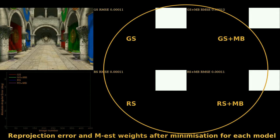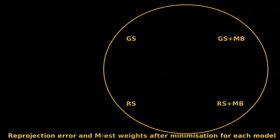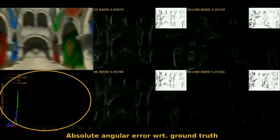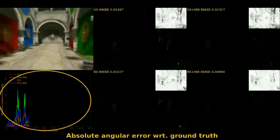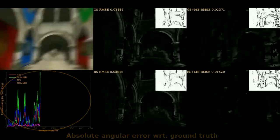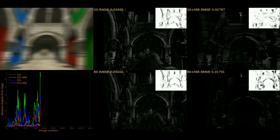Each of these images show the reprojection error in the larger image, and the M-estimator weights after registration in the sub-image. The plot on the bottom left shows the angular error with respect to ground truth. Translation error is similar. As can be seen, the proposed model minimizes much better than the other approaches.